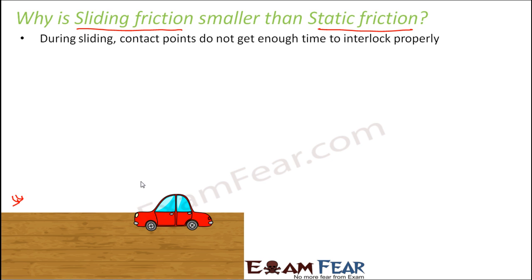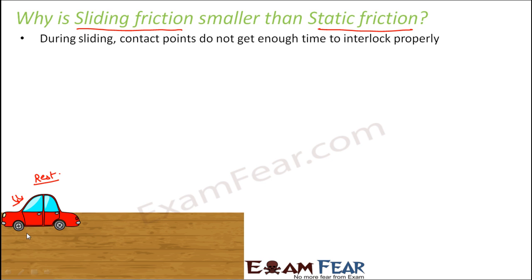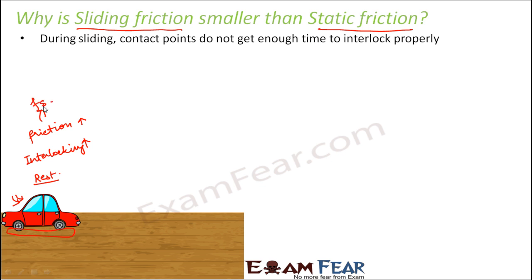Why does this happen? When the object is at rest, if you look at the contact surfaces, the interlocking between those surfaces is extremely high. The surface of the car and the surface of the floor are well interlocked. When they are well interlocked, friction is also more. So when the object is at rest, interlocking is more, friction is more — and this type of friction is static friction.